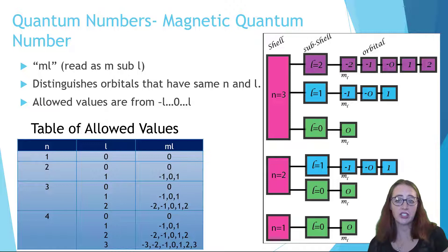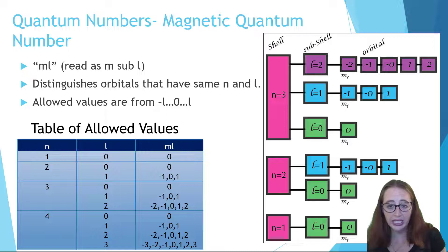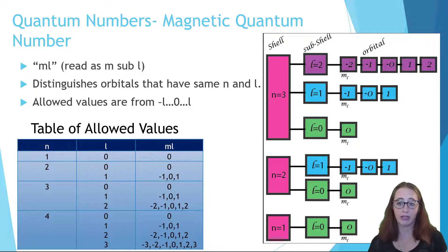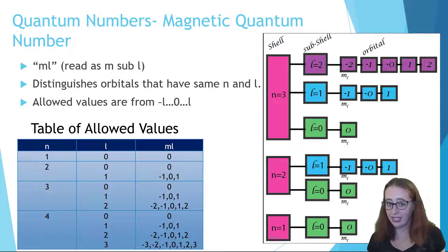Remember that each l value within an energy shell has its own set of m sub l values. So l equals one has a different set of m sub l values than l equals two. Just like our analogy, each room number would have its own set of lettered rows. If n equals three, but we are talking about a p orbital where l is equal to one, we are still only allowed values of negative one, zero, and one, regardless of the n value. So the short version is l sets the m sub l value, not n. You have to work down from n to get l to get m sub l.